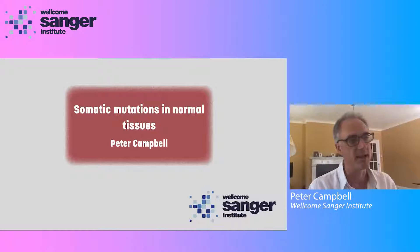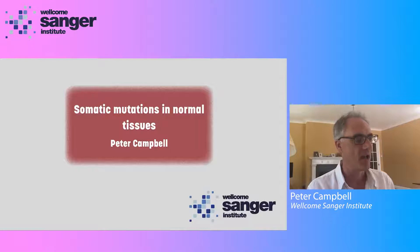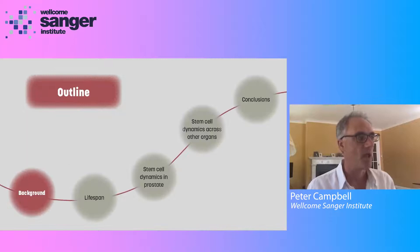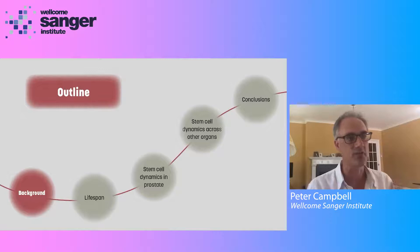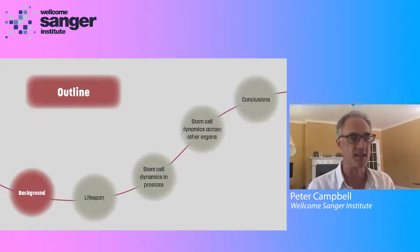Hi there. My name is Peter Campbell. I'm a group leader at the Wellcome Sanger Institute in the Cancer Aging and Somatic Mutation Program. Recently, we've been doing a lot of work looking at the patterns of somatic mutations in normal tissues, and that's the subject matter I'm going to cover today. I'll cover the background, how we identify somatic mutations in normal tissues, the patterns of how these mutations change over the lifespan, and then drill into a few stories looking at clonal and stem cell dynamics across different organs — including some unpublished data in prostate.